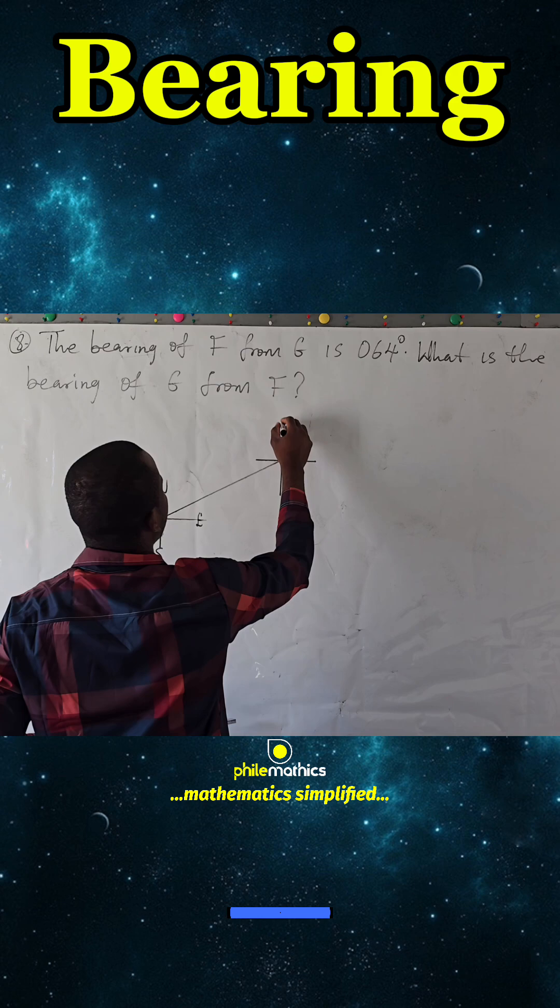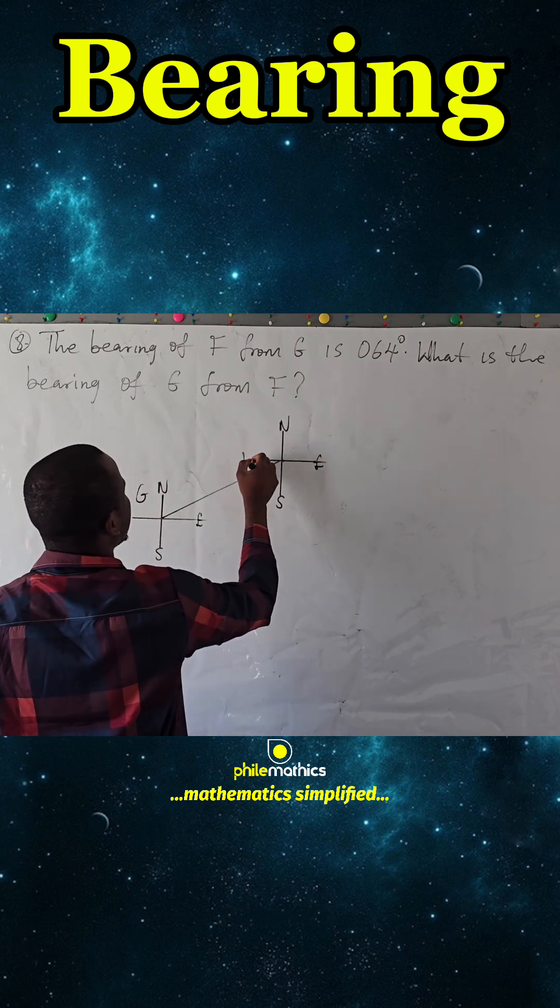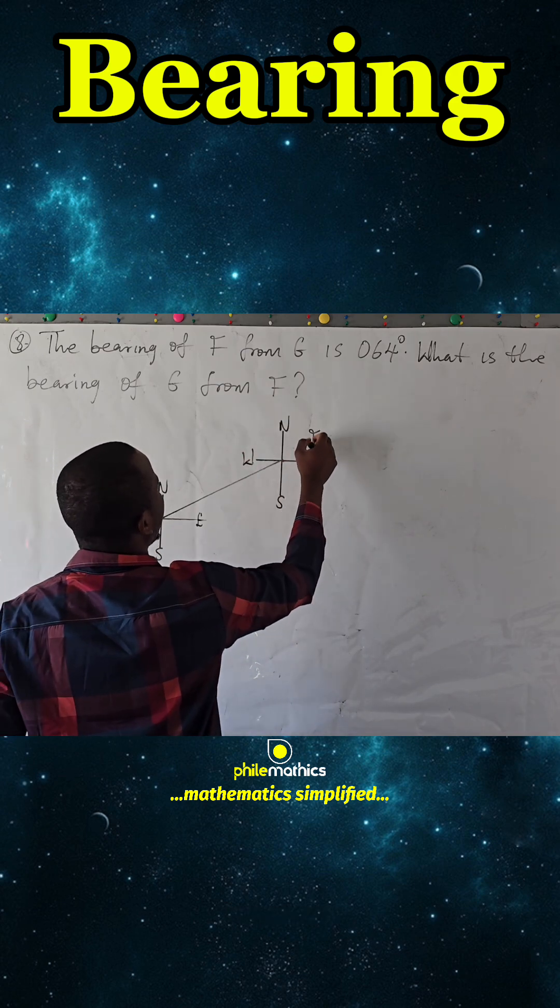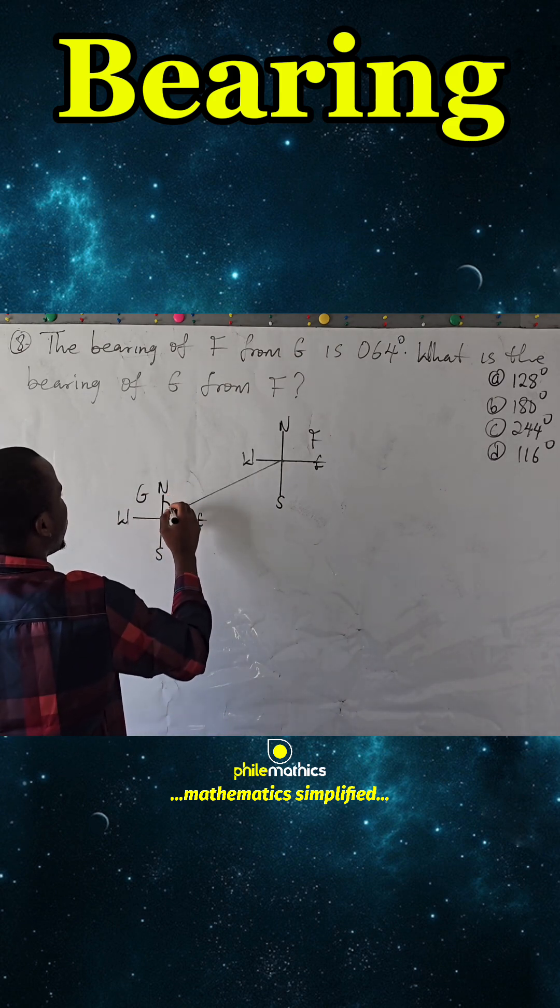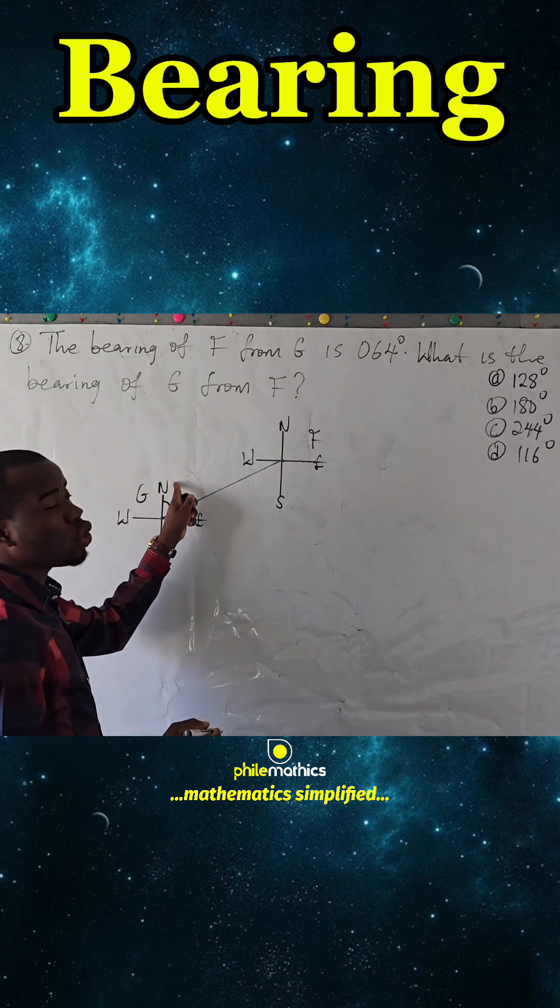This is north, south, east, and west, and so this is F. Since we are given that this is 64 degrees, because we measure bearing from the true north.